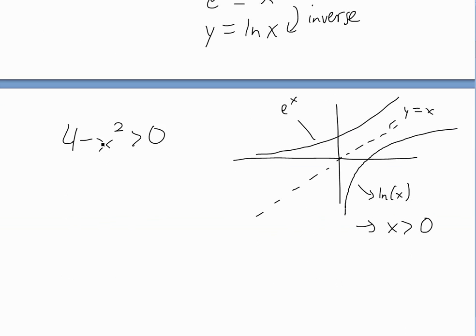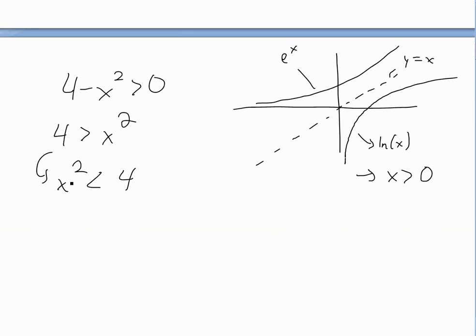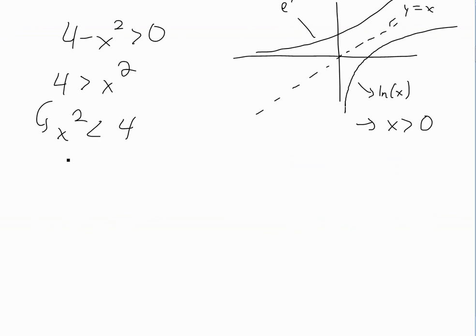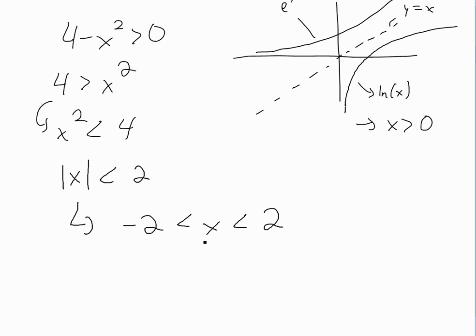Since this is ln(4 - x²), we need 4 - x² to be greater than zero — that's the only region where ln is defined. Rearranging, we get x² less than 4, which means the absolute value of x is less than 2. So x is greater than negative 2 and less than 2. This interval (-2, 2) is our domain — the only x values where y is defined.